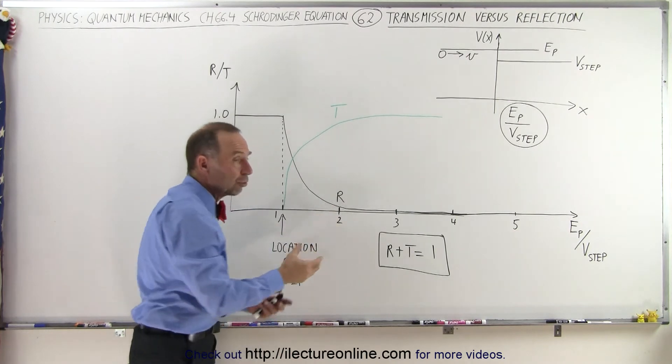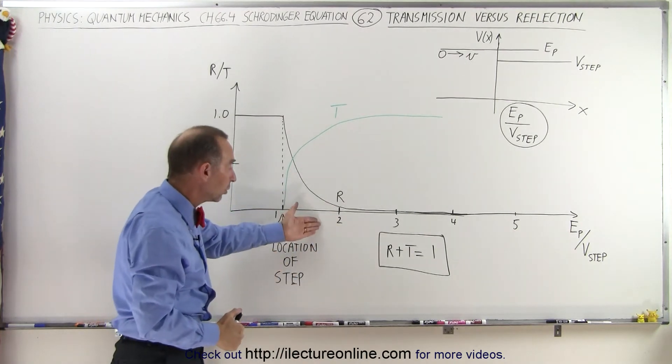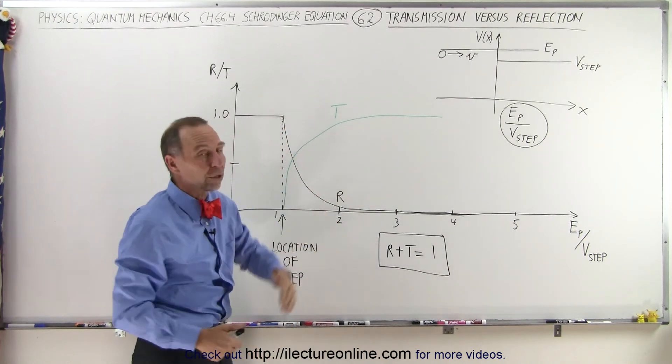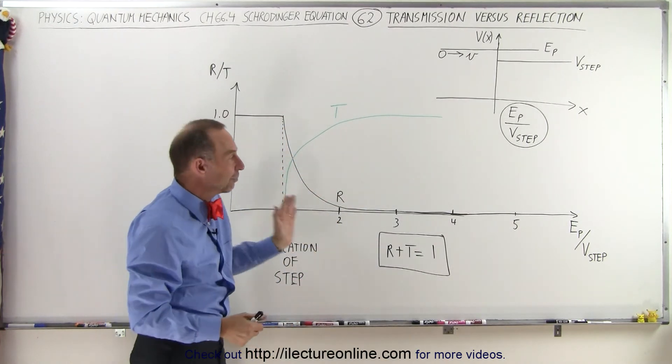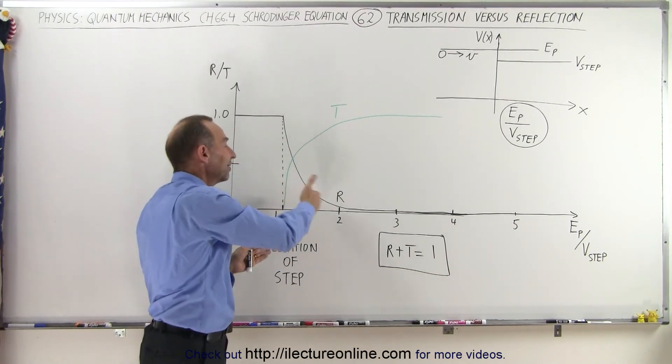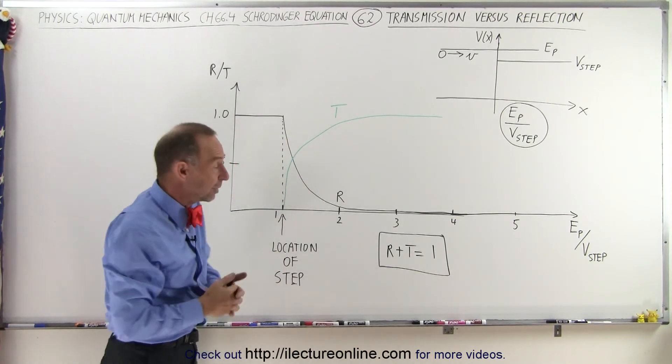By the time we have a ratio of 2 to 1 with the energy of the particle to the energy of the step, then almost none of the particles will be reflected and virtually all of them will be transmitted. But you can see it's not like it's a step function like you would expect to see in the macro world.